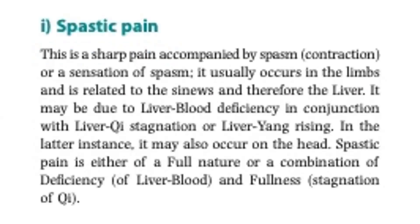Next is spastic pain. This is a sharp pain accompanied by a spasm — meaning contraction — or a sensation of spasm. It usually occurs in the limbs and is related to the sinews and therefore the liver. It may be due to liver blood deficiency in conjunction with liver qi stagnation or liver yang rising. In the latter instance, it may also occur in the head. Spastic pain is either of a full nature or a combination of deficiency of liver blood and fullness — the stagnation of qi.